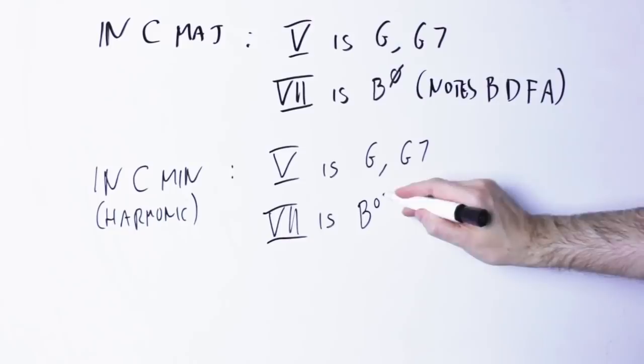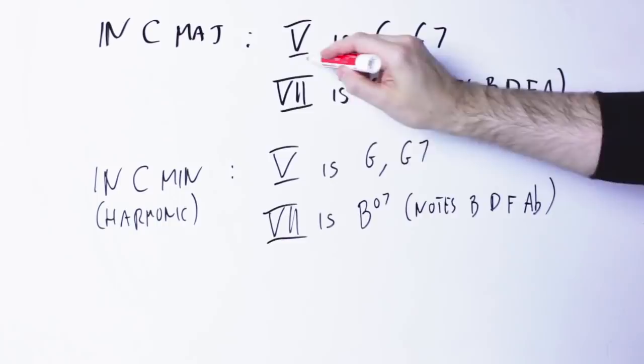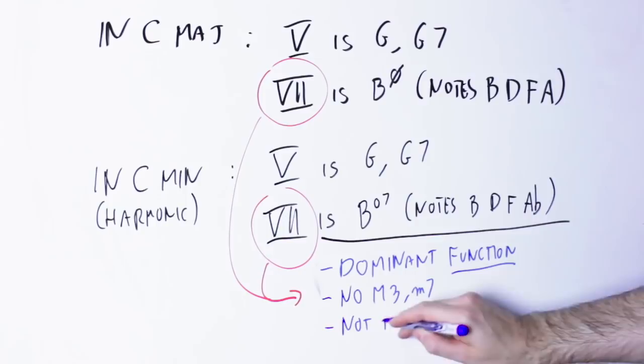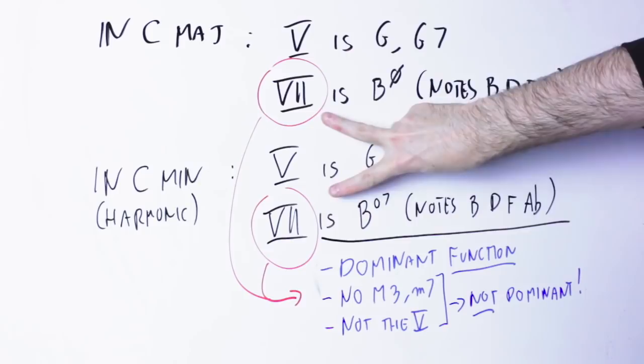Now here we have something really curious, because this chord has dominant function, but this chord doesn't have both a major third and a flat seventh, so it's not a dominant chord in the jazz sense. And it's not the fifth chord of the key, so it's not a dominant chord in the classical sense. So these chords have dominant function but they are not dominant chords.